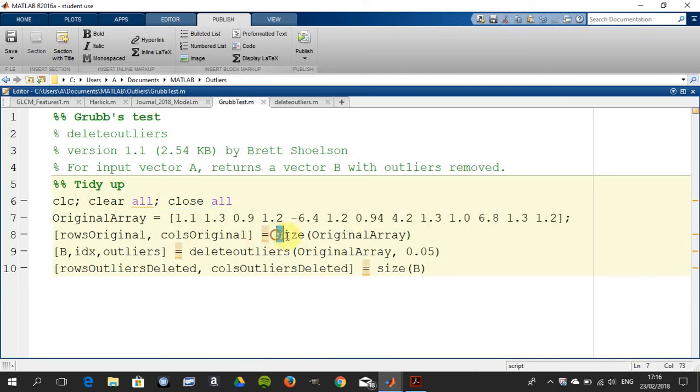On line 8, when we see it running, we got the size, and we're going to see it was of size 13. We ran Brett's function on the original array at a significance level of 0.05, and this returns three things.